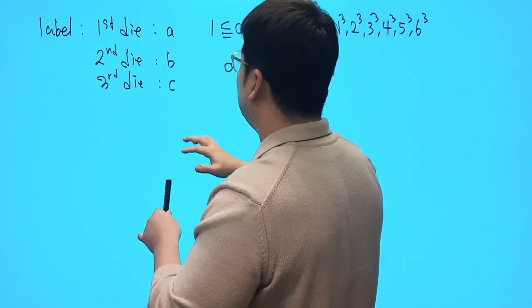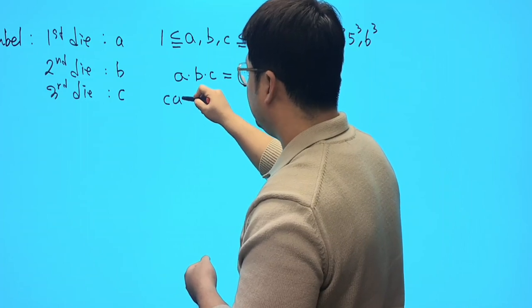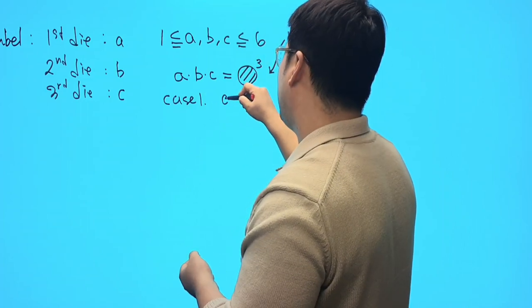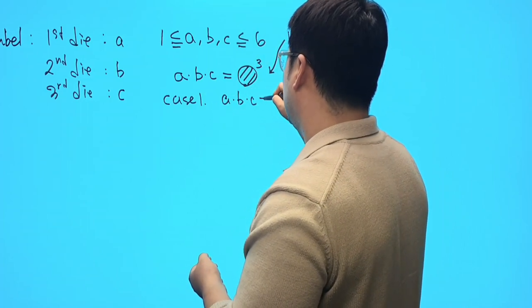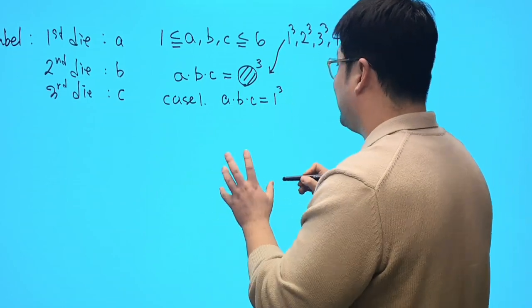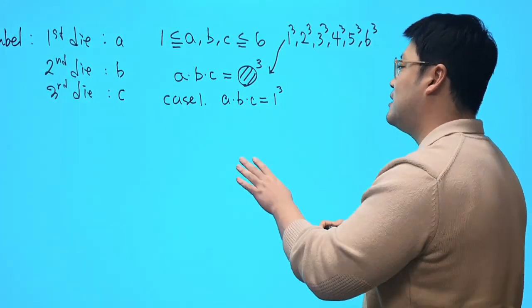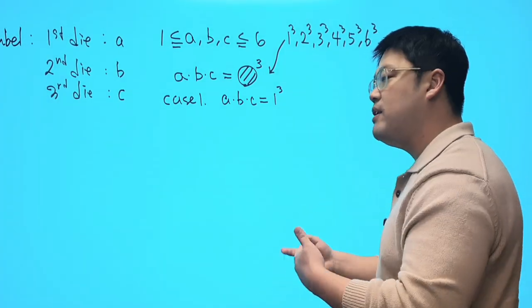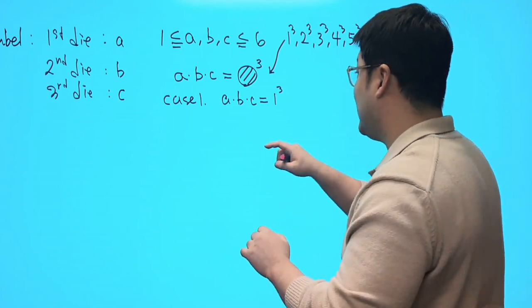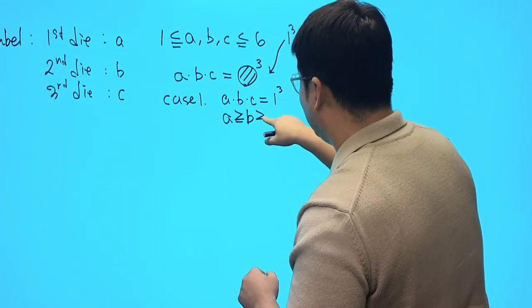So here we go. Performing some case works. Let's try to say basic cases, case number one. Well, what if we have A times B times C equals one, one cubed? Well, in this case, using partition of natural numbers, we got to lock the order between A, B, and C and try to figure out how many cases that we get. So I'm going to assume, without loss of generality, I'm just going to assume that this is true.